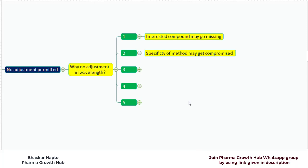The specificity of method may get compromised. What is specificity? Specificity is nothing but the ability of your analytical procedure to quantify the analyte without interference from the sample matrix or the diluent. The proposed wavelength in a monograph is designed in such a way that the sample matrix interference or the interference from diluent will get nullified.